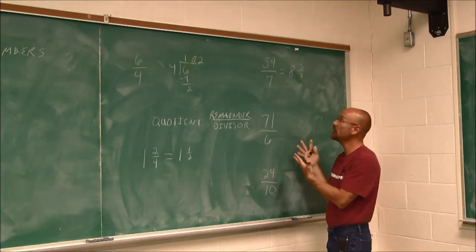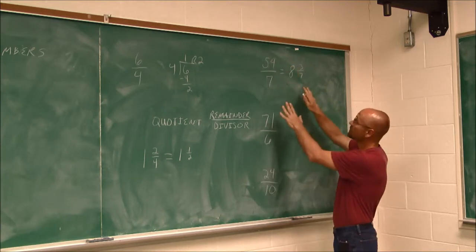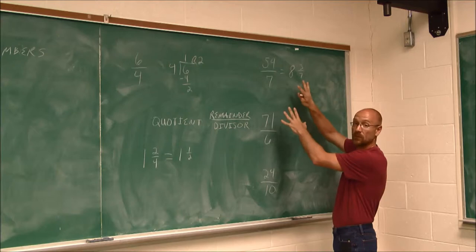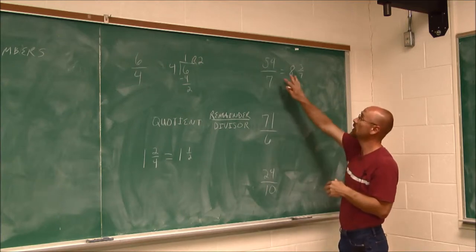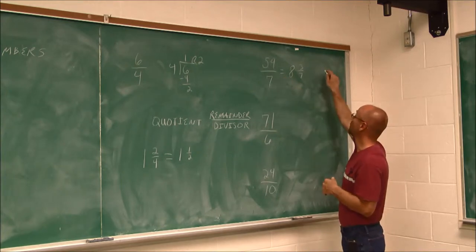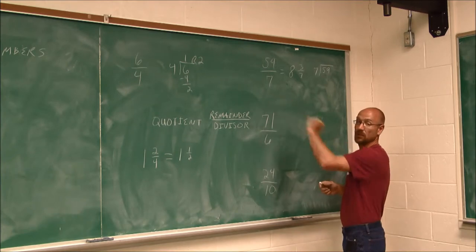Now, notice I'm not showing any work here. We're doing it as mental math. But if that's a little bit troublesome for you at first, you need some more practice before you get to that. Maybe you need to review your times tables. Definitely do the division, 59 divided by 7, just like we did there.